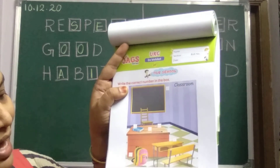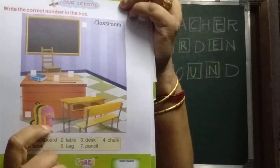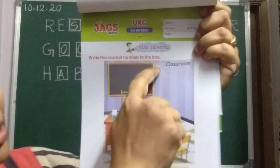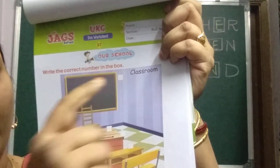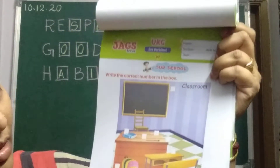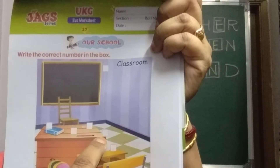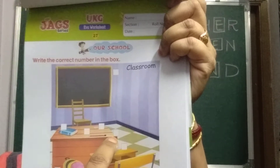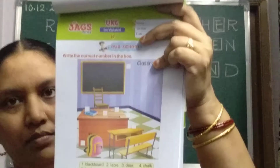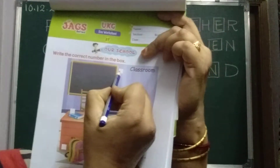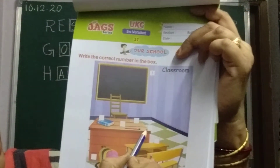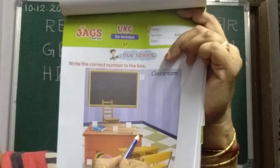So, first number is blackboard. Where is the blackboard? Here. So, in the small white color box, you should write number 1. Then, number 2 is table — to the corner here, you should write number 2. Then, number 3 is desk. Where is the desk? This is a desk. Number 3.